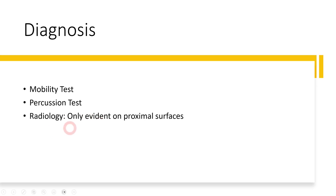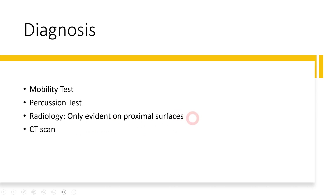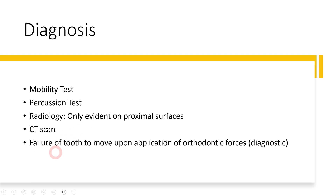We can also use radiology — periapical radiographs can show obliteration of the periodontal ligament on the proximal surfaces, and OPGs are also used. CT scan is a less commonly used diagnostic modality. One of the most definitive diagnostic tests is failure of tooth movement — when orthodontic force is applied and the tooth does not move at all, that is the definitive diagnostic indicator of an ankylosed tooth.